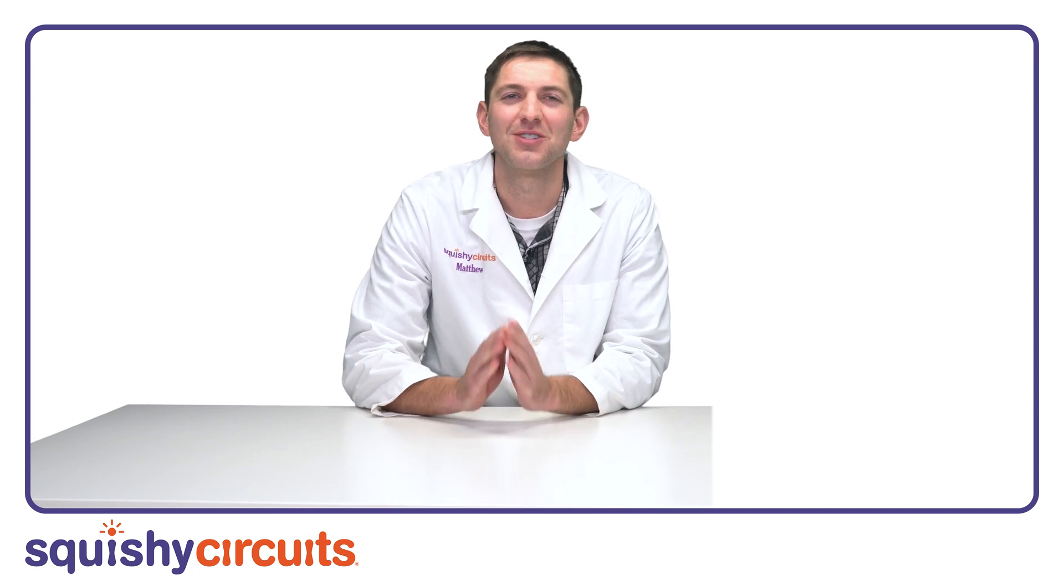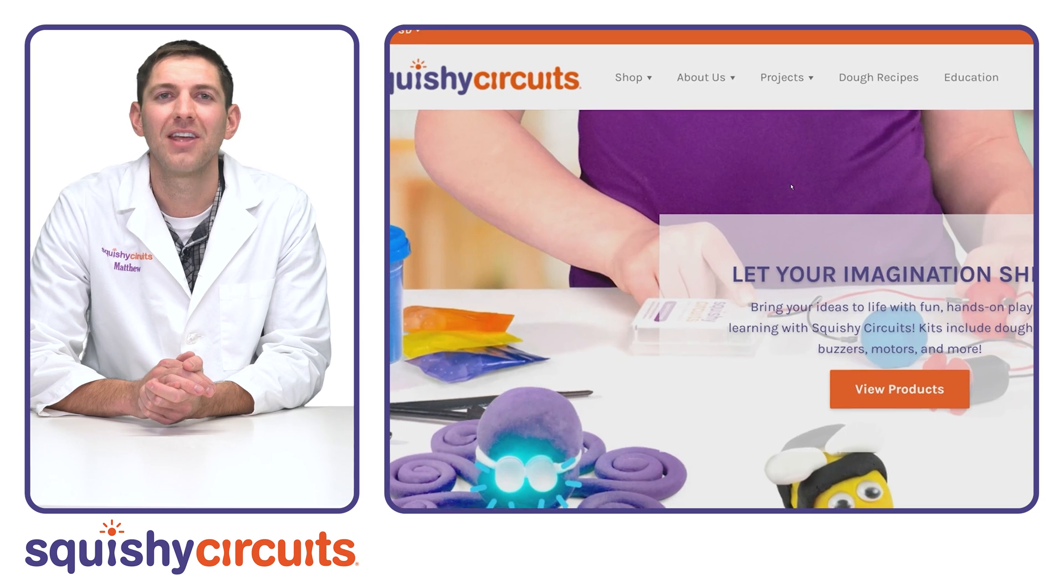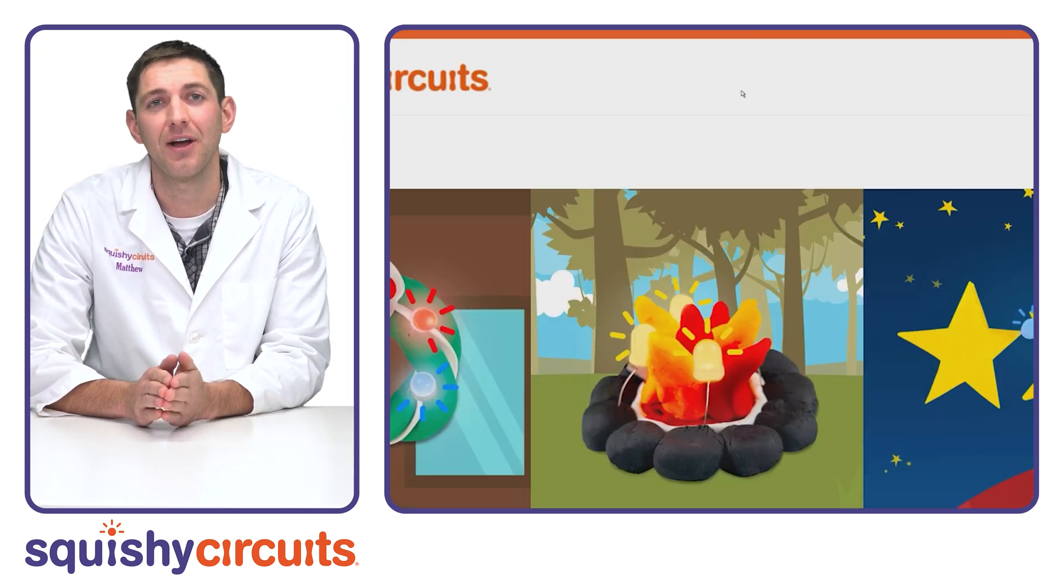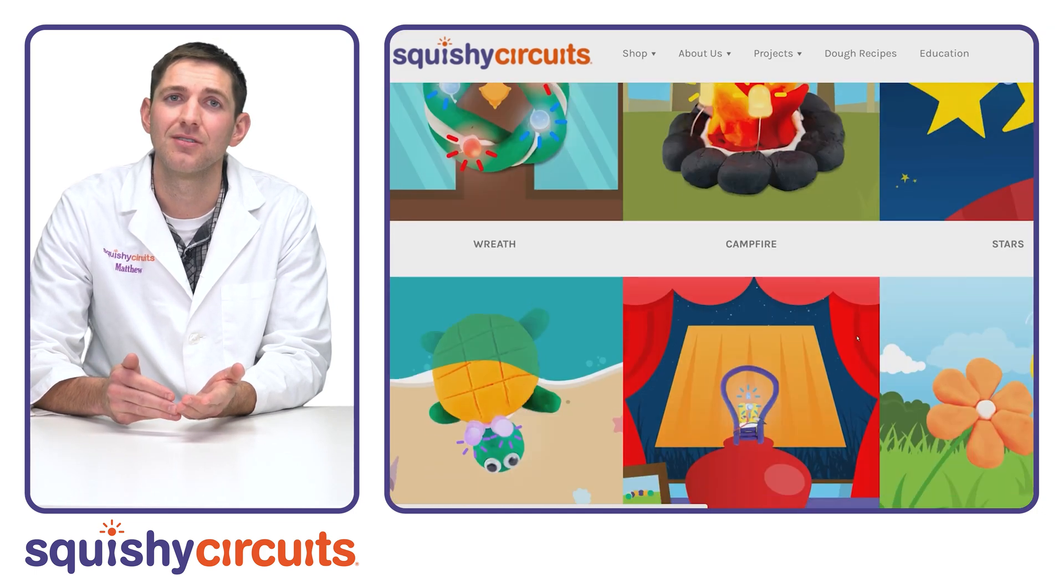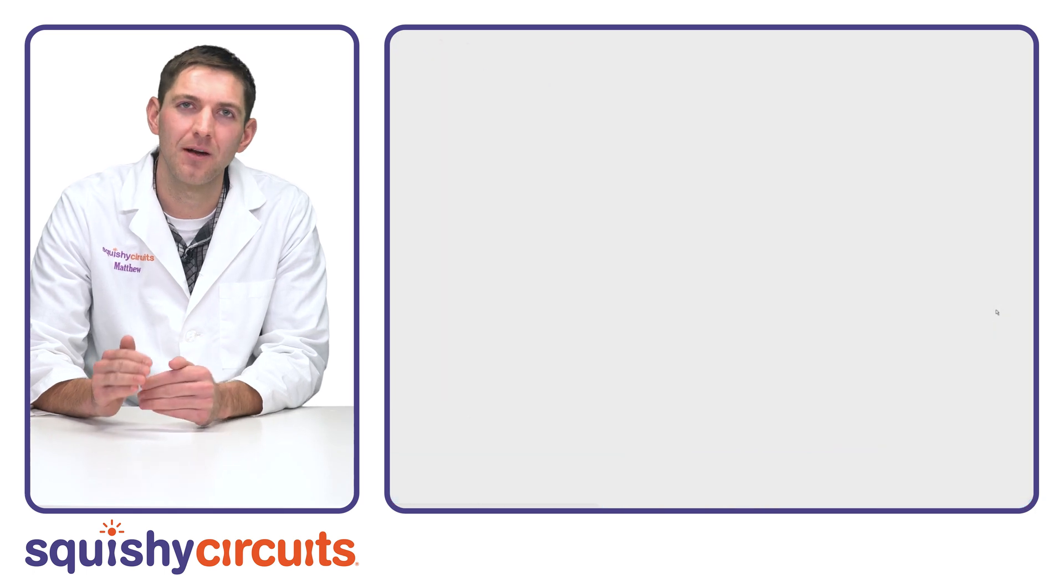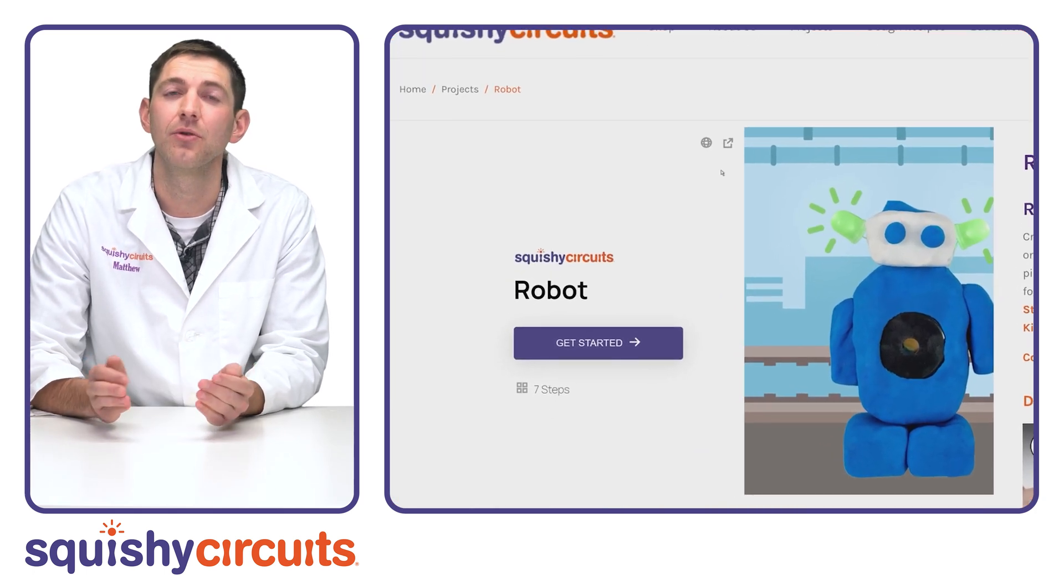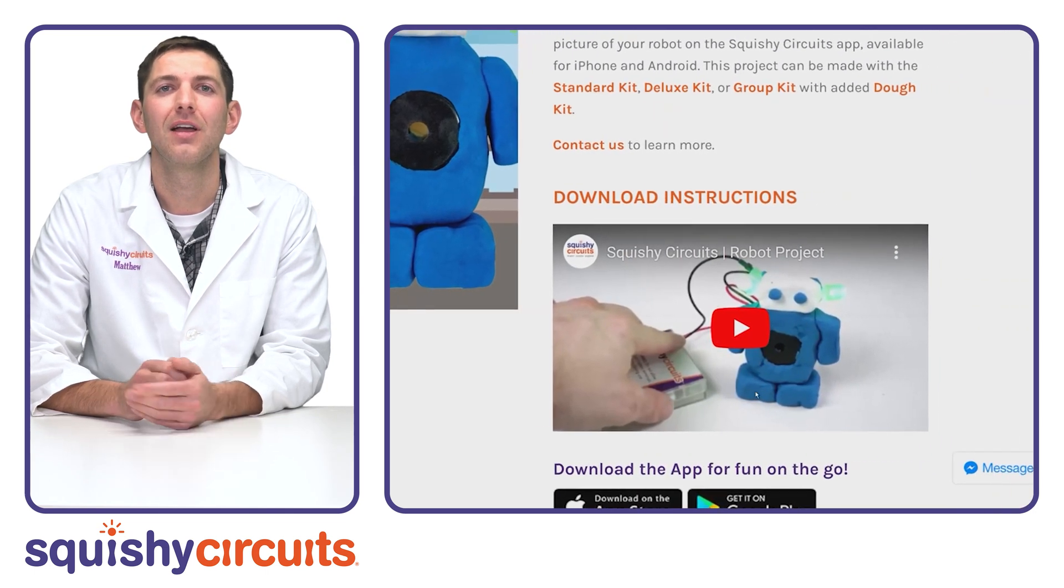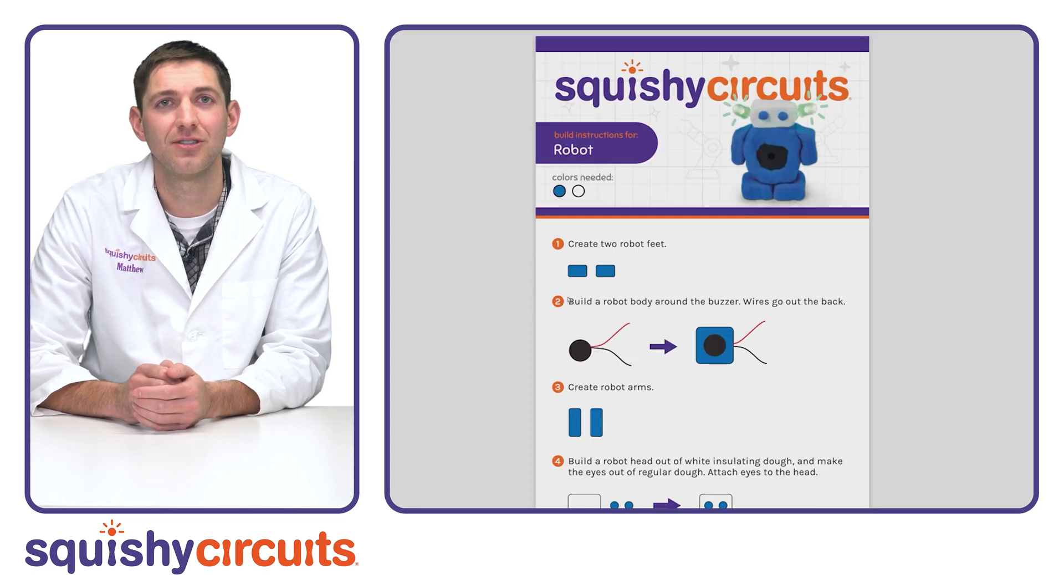With Squishy Circuits, the possibilities are truly endless. If you can mold it out of dough, you can bring it to life. The Squishy Circuits website has lots of fantastic resources to help get you started. Navigate to SquishyCircuits.com and click on the Projects tab. There, you will find a list of example projects. We are constantly adding more, so keep checking back. If you click on a project, it brings up a more advanced view that shows an instructional slideshow, a video, and a link to download and print the instructions.